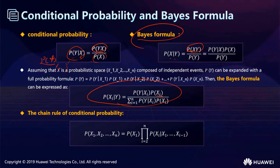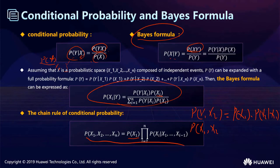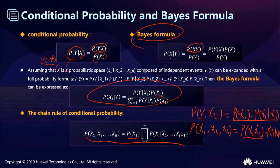The chain rule of conditional probability works as follows: we use P(X_1) as the prior probability multiplied by P(X_2|X_1) as the conditional probability. For example, to compute P(X_1, X_2): we multiply P(X_1) by P(X_2|X_1). Similarly, for P(X_1, X_2, X_3): we calculate P(X_1) * P(X_2|X_1) * P(X_3|X_1, X_2). By applying this rule one step at a time, we get the full chain rule formula.